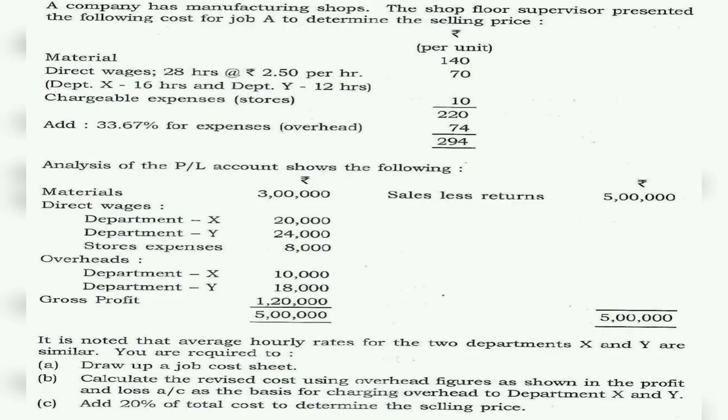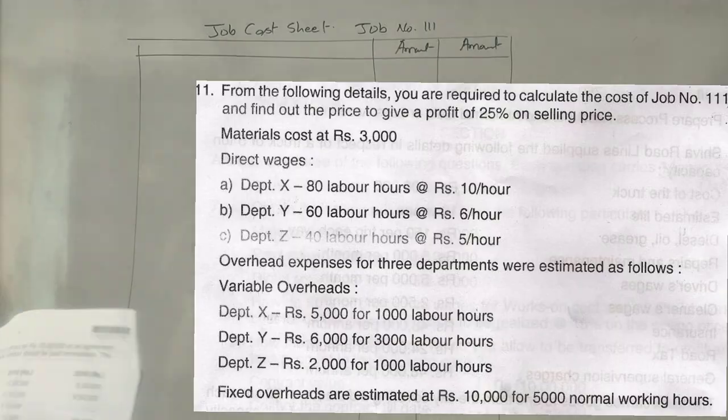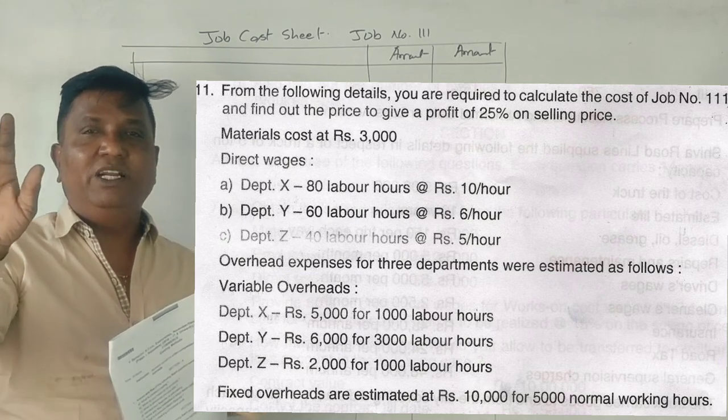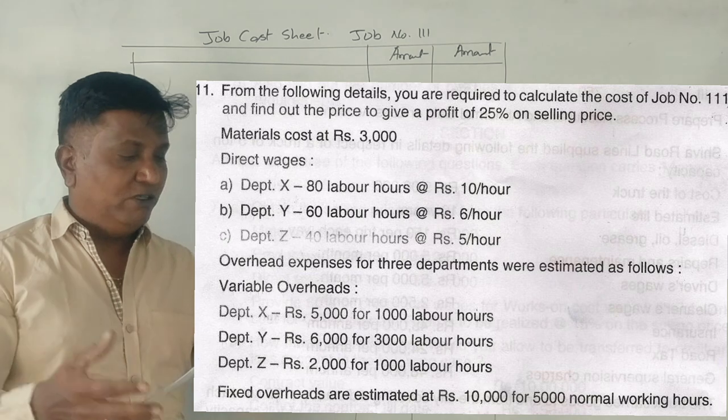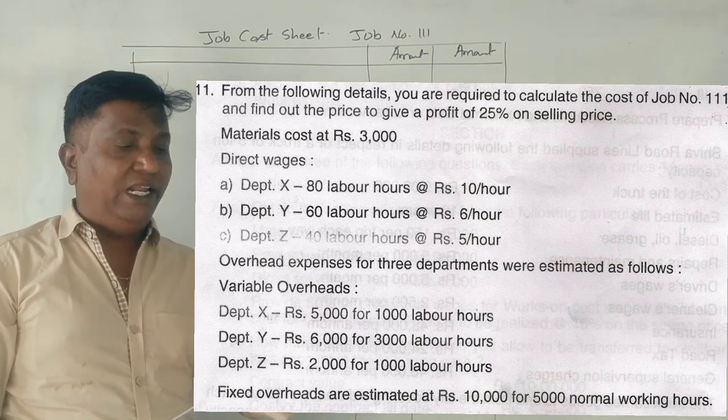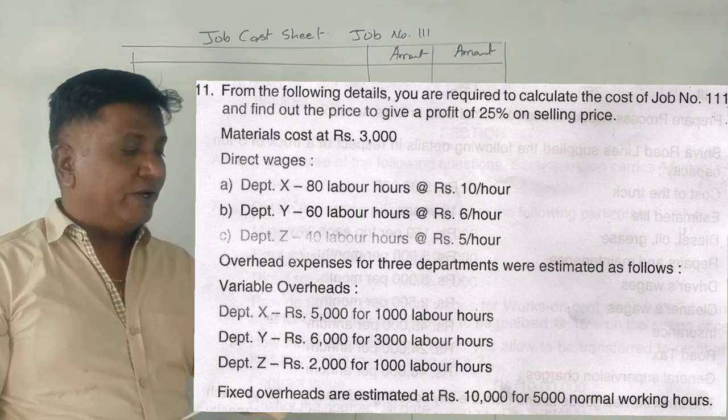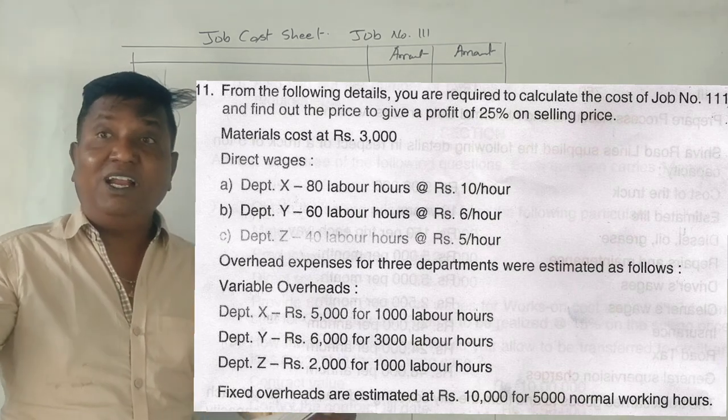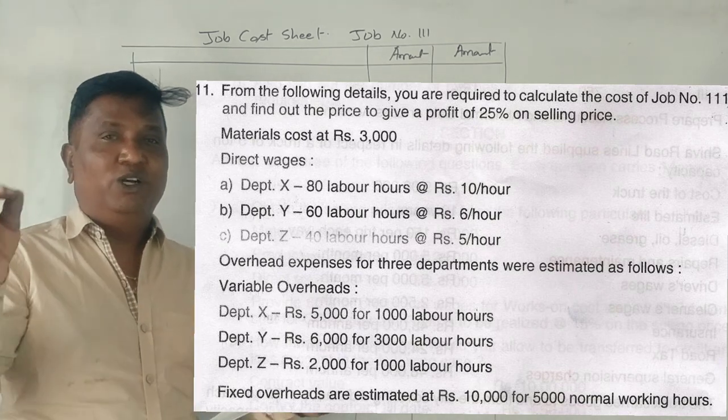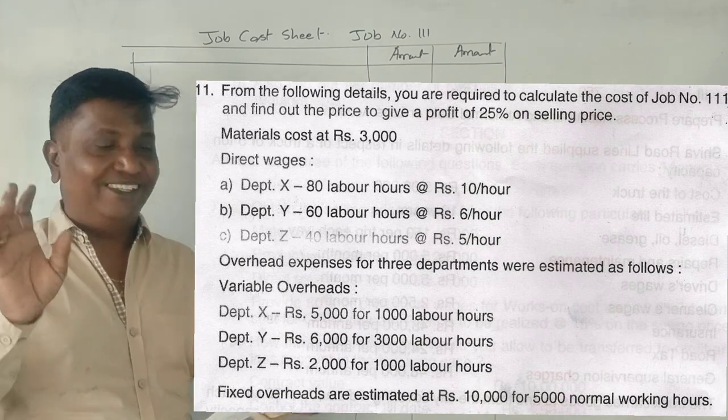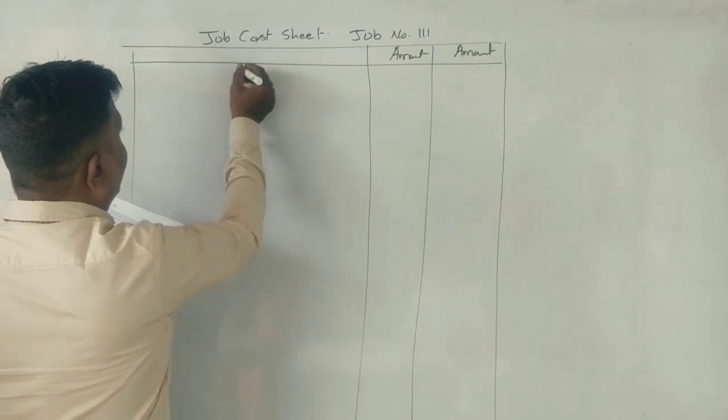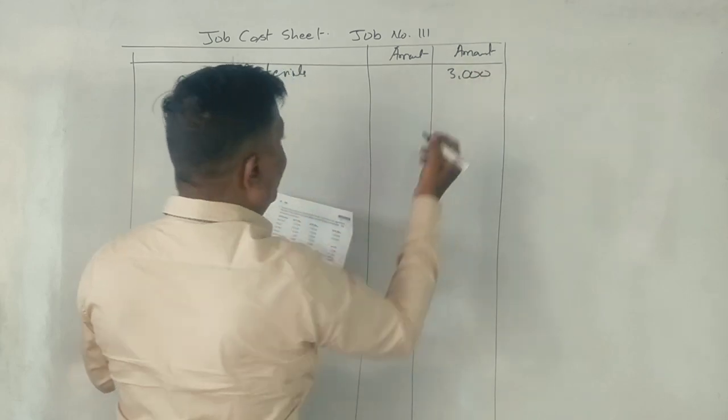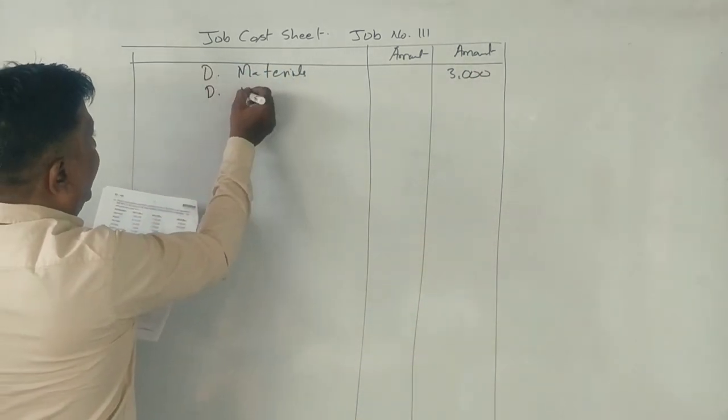Students, 2018 in job cost, 14 marks, 14 minutes. First question. From the following details, you are required to calculate the cost of job number 111 and find out the price to give a profit of 25% on selling price. Material costed 3,000. It is direct material.